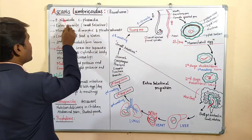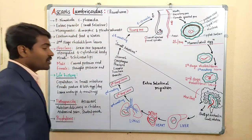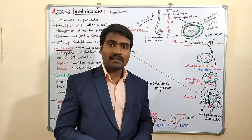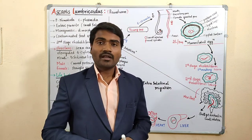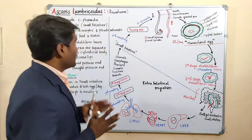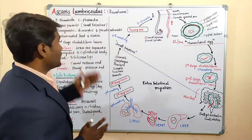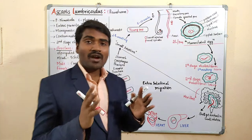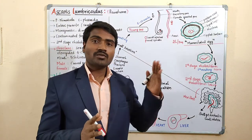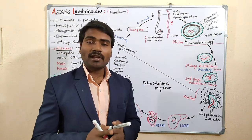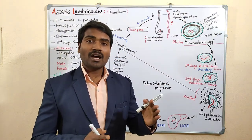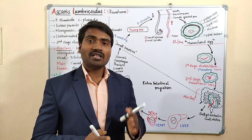Let's come to Ascaris lumbricoides. It is a parasite. What is Ascaris? It has a systematic position. It belongs to the Kingdom Animalia, Phylum Nematoda or Aschelminthes.